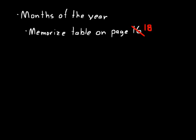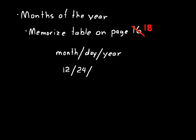A lot of times when we write dates, we use a month, day, year format. We show the month first, then a slash, the day, another slash, and then the year. For example, my birthday is in the twelfth month, on the twenty-fourth day of that month, and 1965 is the year. Sometimes you abbreviate the year — you just say twelve, twenty-four, sixty-five.